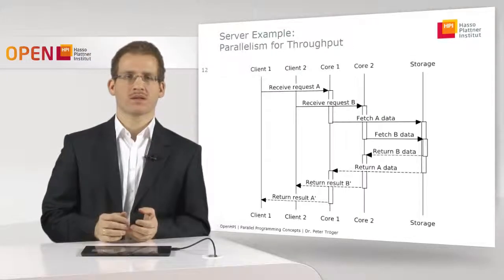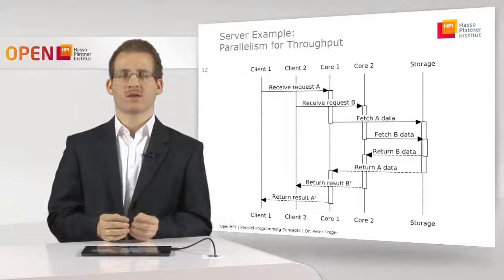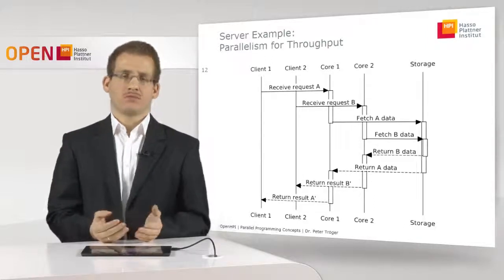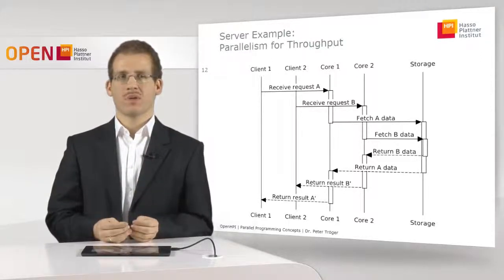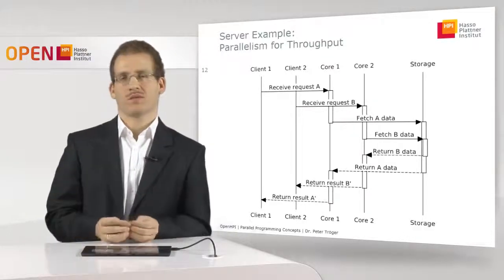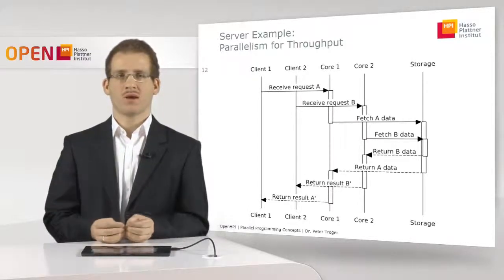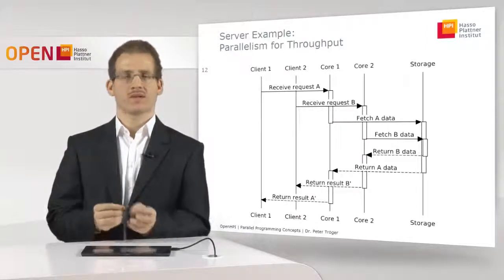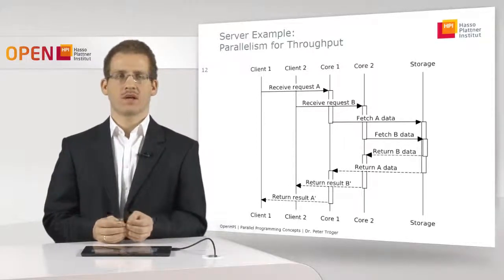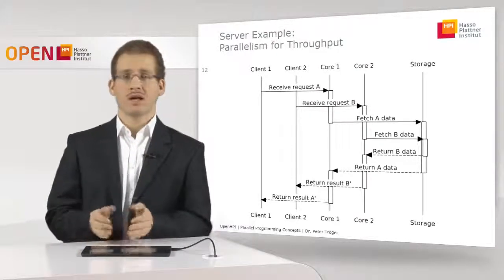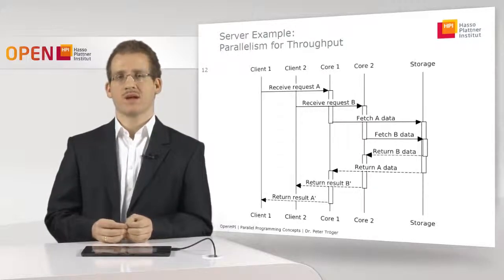Taking this example further: what happens if we add another core to the system? If the server now has two cores and we still have our two clients, we can use parallel processing of requests. We have a similar situation where cores first process incoming data and then ask storage, but now we can start processing request B while request A is still being computed on core 1 — as you can see by the overlap in the picture. The parallelism results from taking our concurrent software and adding parallel hardware, where these parallel processing elements are now useful to parallelize request processing.